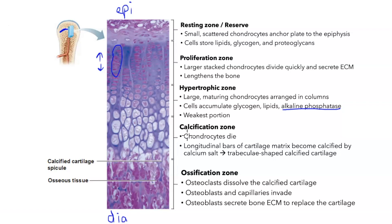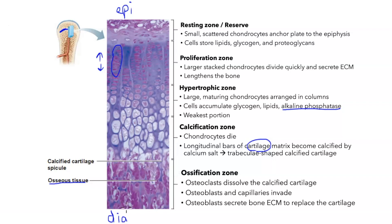Fourth, we have the calcification zone. In this zone, the chondrocytes die, and longitudinal bars of cartilage matrix become calcified by calcium salts, which show up as the bright white color you see here. Even though the cartilage is calcifying, this is not considered bone yet — it is still cartilage, just covered by calcium salts. What you have is trabeculate-shaped calcified cartilage, and it becomes bone in the next zone, the ossification zone, in which osteoclasts dissolve the calcified cartilage and osteoblasts replace it with bone extracellular matrix by secreting osteoid, which becomes the osseous tissue. Osseous means bone, so this is the actual bone tissue, showing up in the darker purple in contrast to the lighter colors, which are calcified cartilage.